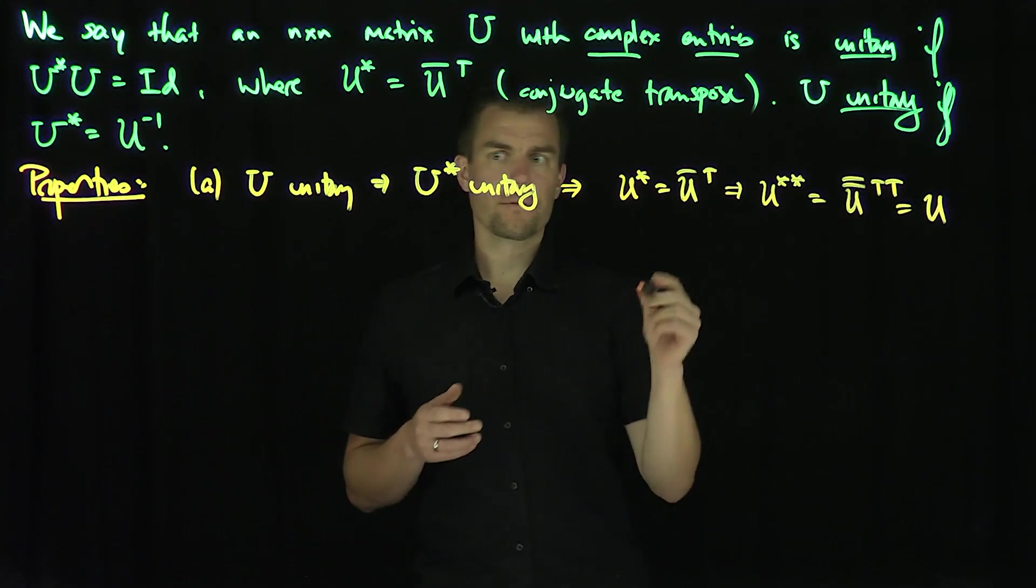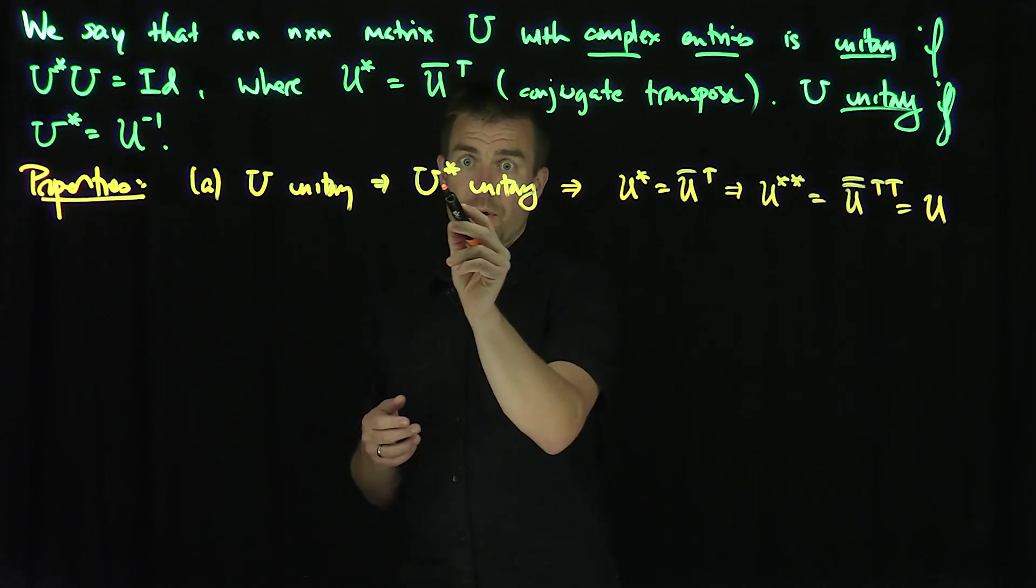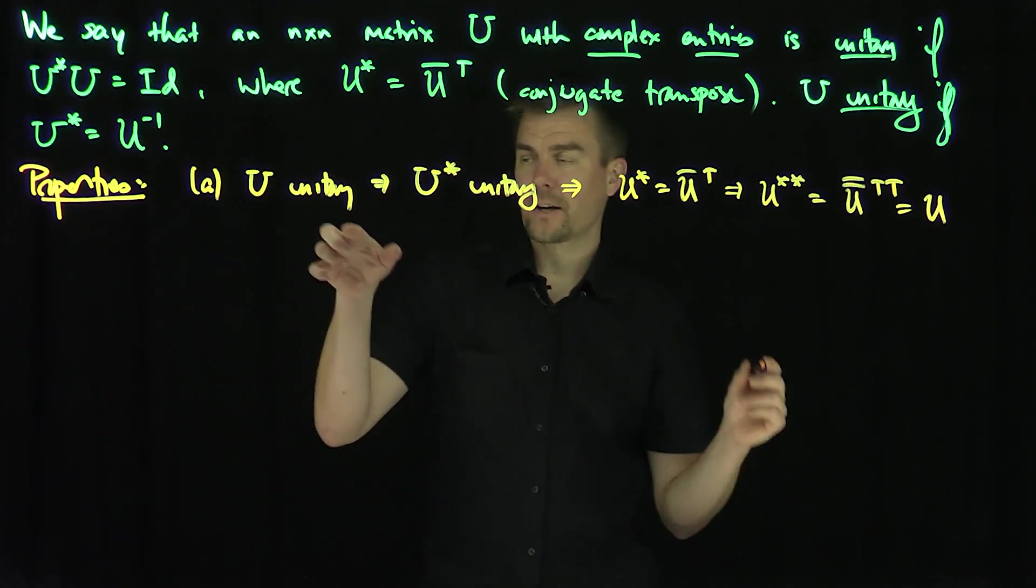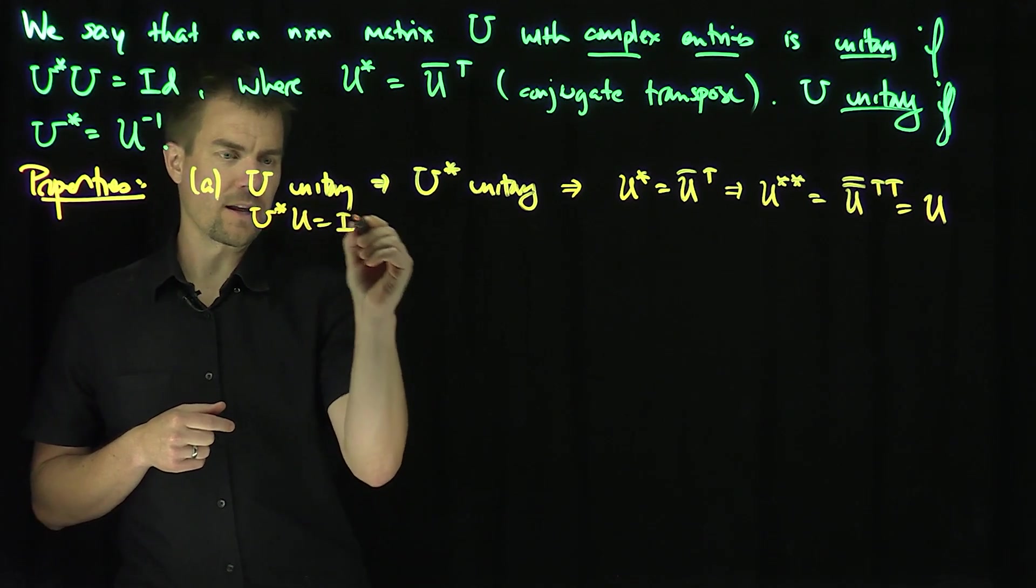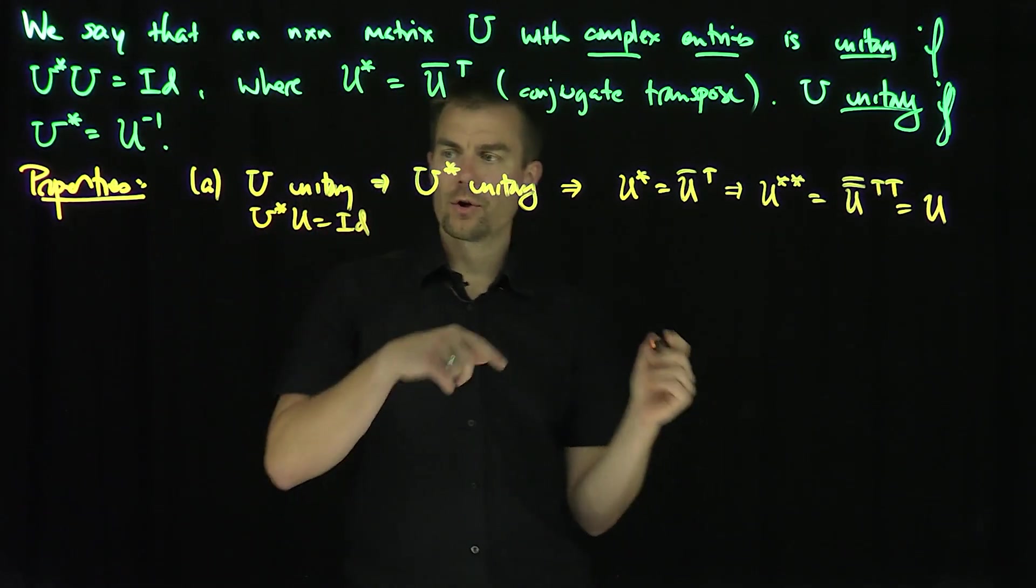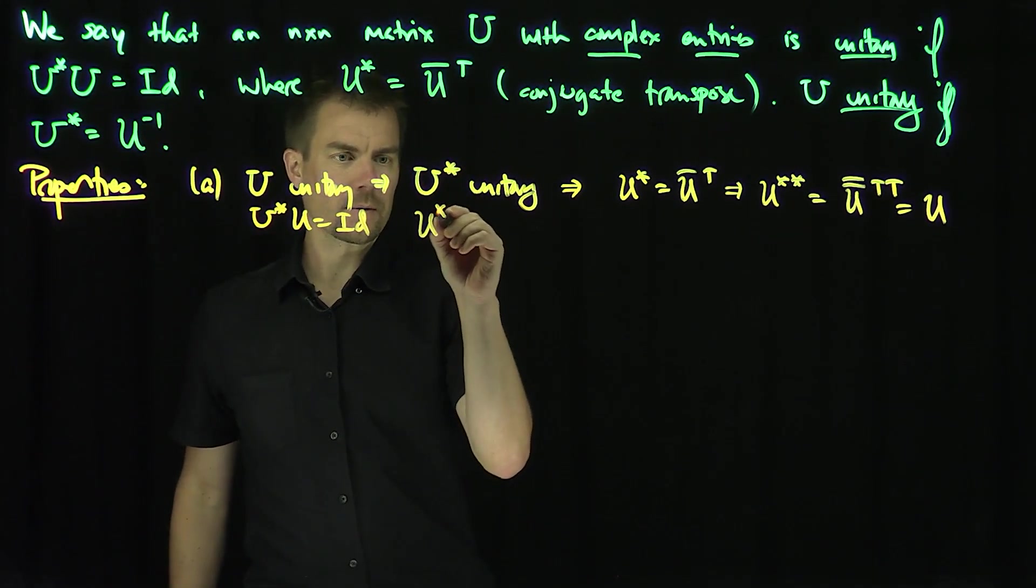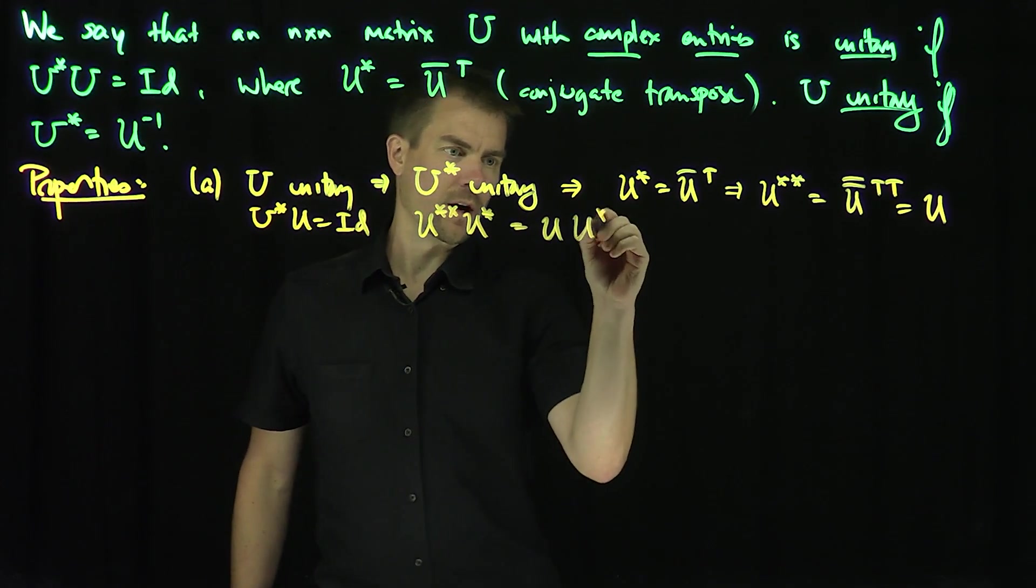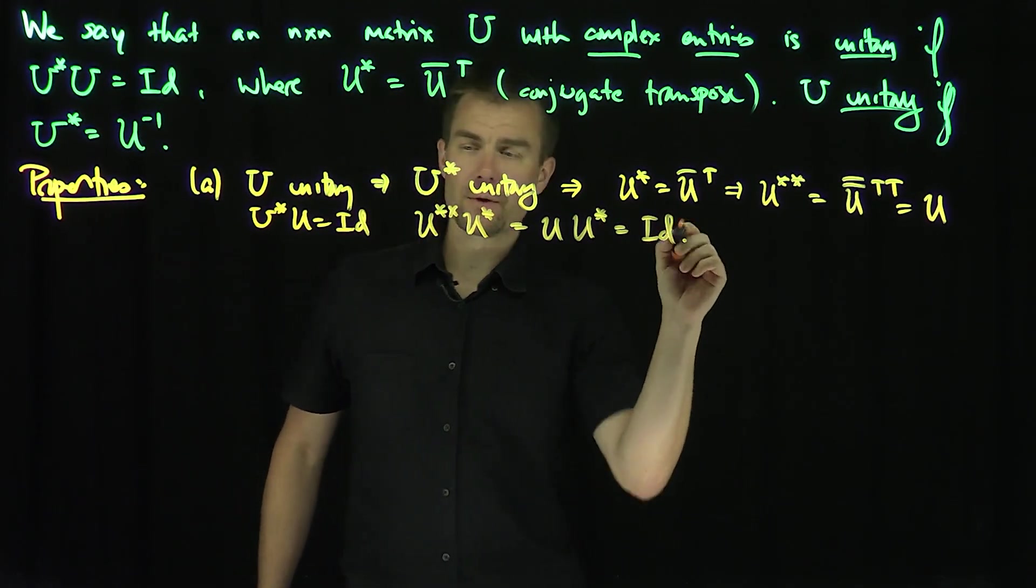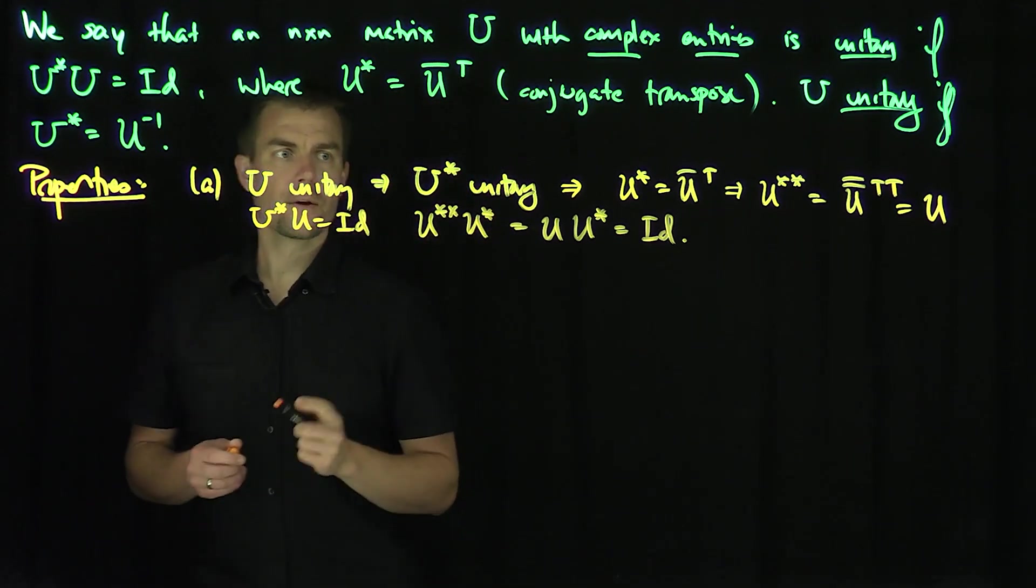So in other words, I know that since U is unitary, I know that U star U is the identity. And now I know that U, U star star, U star, which is U, U star, is also equal to the identity. So that says that U star is unitary.